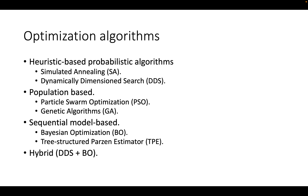Coming to the optimization algorithms that we use: we use heuristic-based probabilistic algorithms, which include simulated annealing and dynamically dimensioned search. We also use population-based algorithms, including particle swarm optimization and genetic algorithms. We also use sequential model-based algorithms, which are Bayesian optimization and tree-structured Parzen estimator. We also use an algorithm called hybrid, wherein we combine Bayesian optimization — a model-based algorithm — and initialize it with a fast heuristic-based algorithm like dynamically dimensioned search.